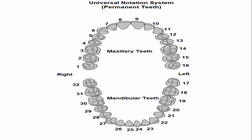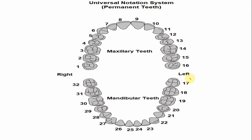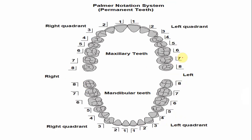In the universal numbering system, the number of the mandibular left third molar is 17, and in a clockwise direction, the number of the right third molar is 32. In the Palmar notation system, the third molars of the right and left side both have the same number — 8 — with the only difference being the orientation of the shape indicating the mandibular left or right quadrant.